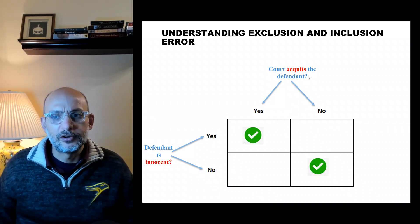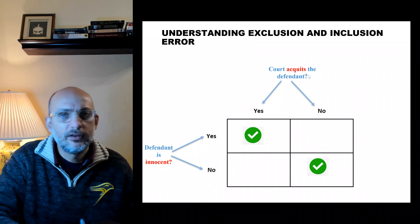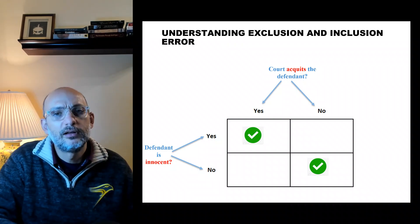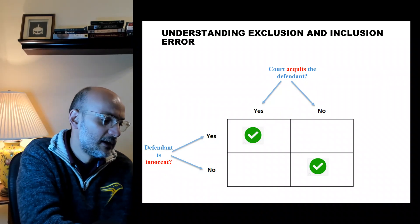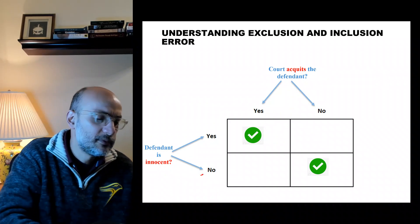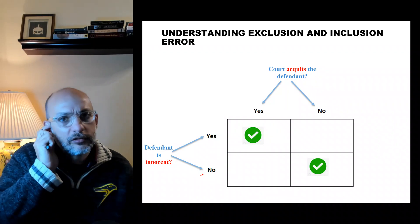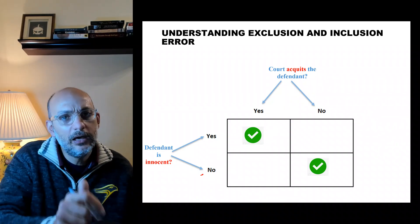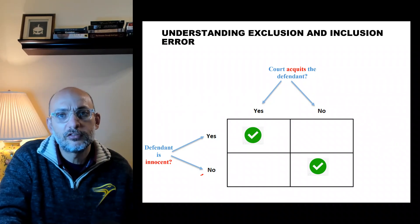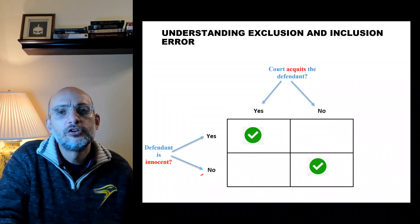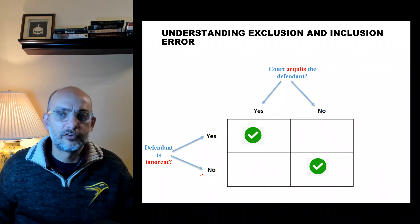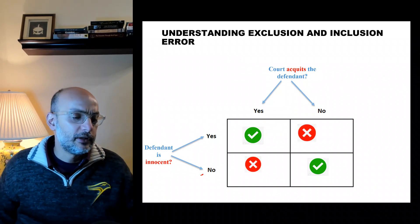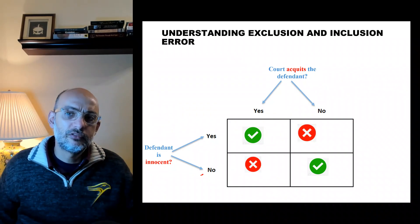When the decision is correct: an individual is innocent and the court acquits them, or the individual did indeed commit the crime and the court established enough evidence to conclude that. This is the good outcome — when everything works well. But you know that you might end up with two errors.